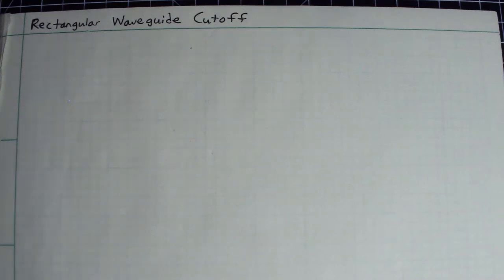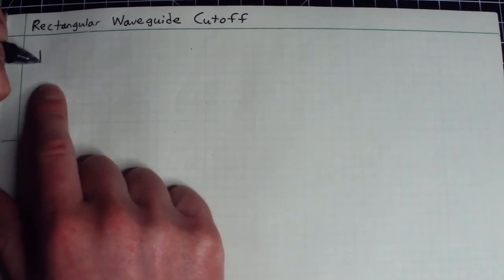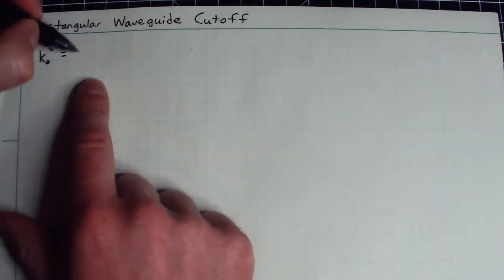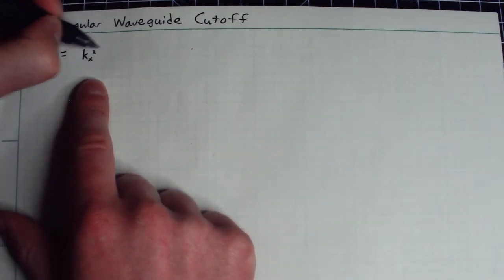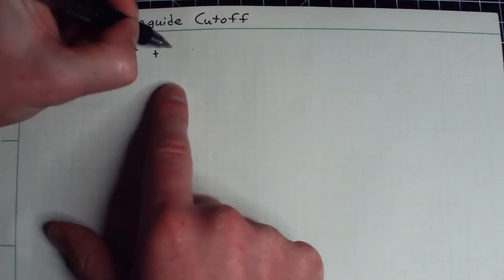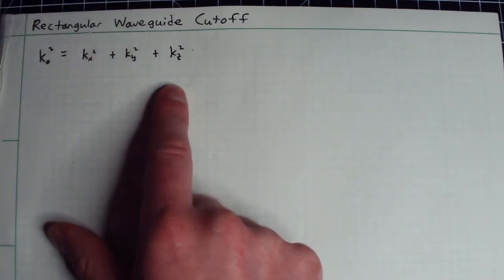Hi everyone, let's talk about this idea of cutoff in a rectangular waveguide. Now, before we get right into that, it's important to take a step back and remember that we had this dispersion relation that was imposed by the Helmholtz equation, where we had k naught squared was equal to kx squared plus k sub y squared plus k sub z squared.